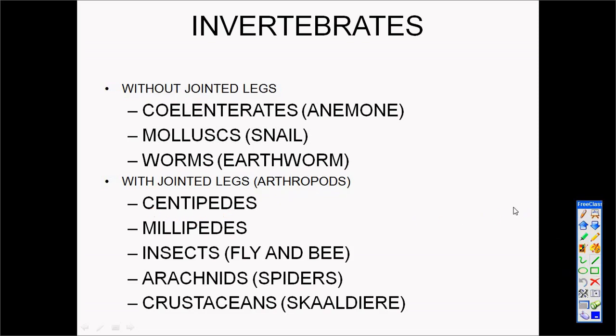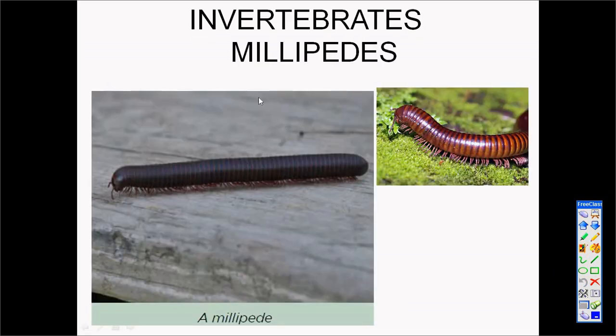Millipedes have many segments. Their segments are round in their body and they have four legs on each segment of their body.